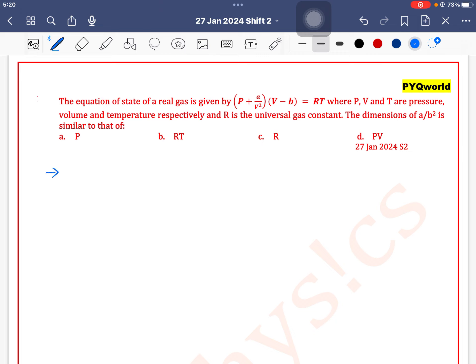For that purpose, I will find the dimension of B first. In this term V minus B, dimension of B must be equal to dimension of V. And what is dimension of V? It is volume, L cube, right?